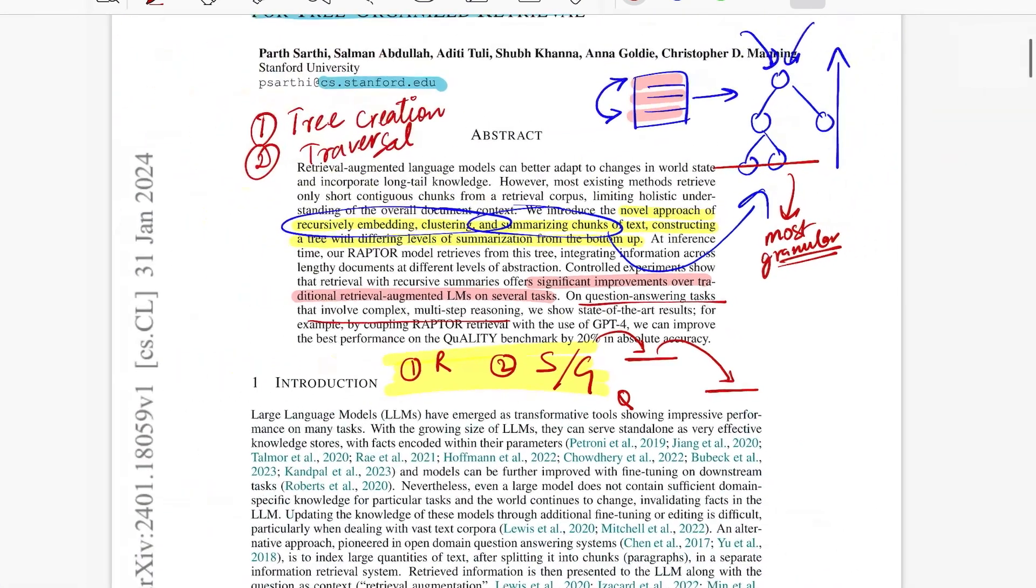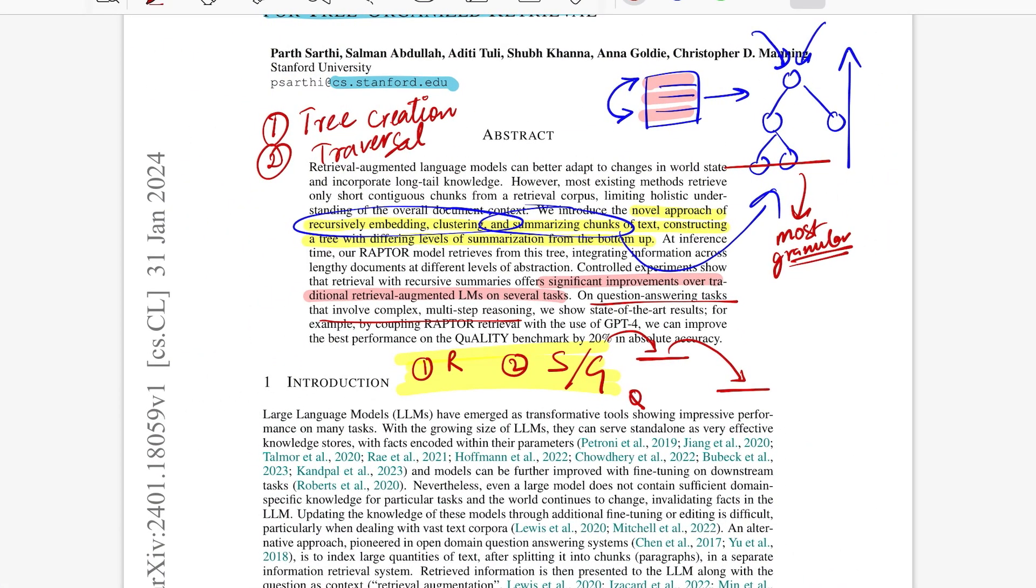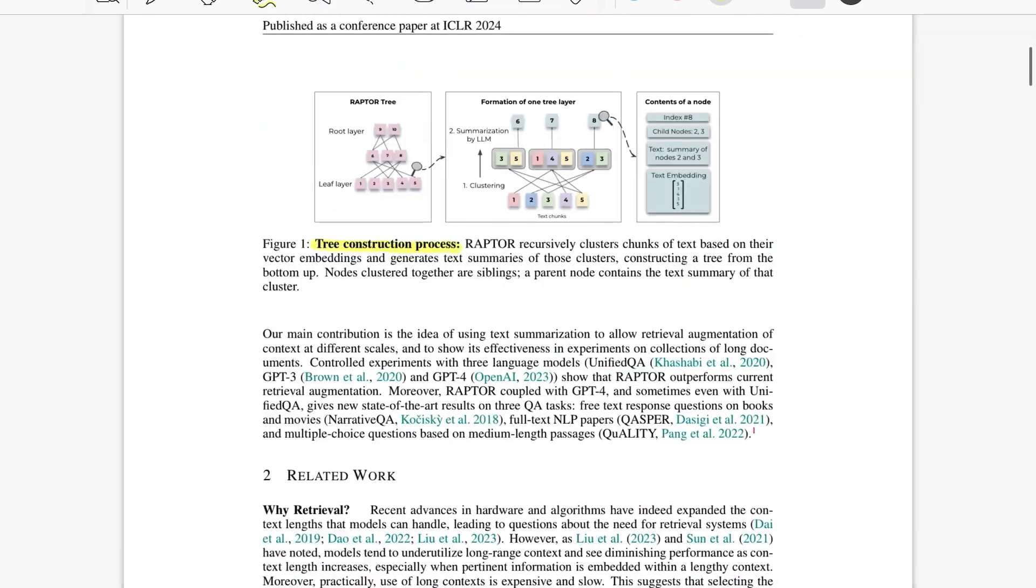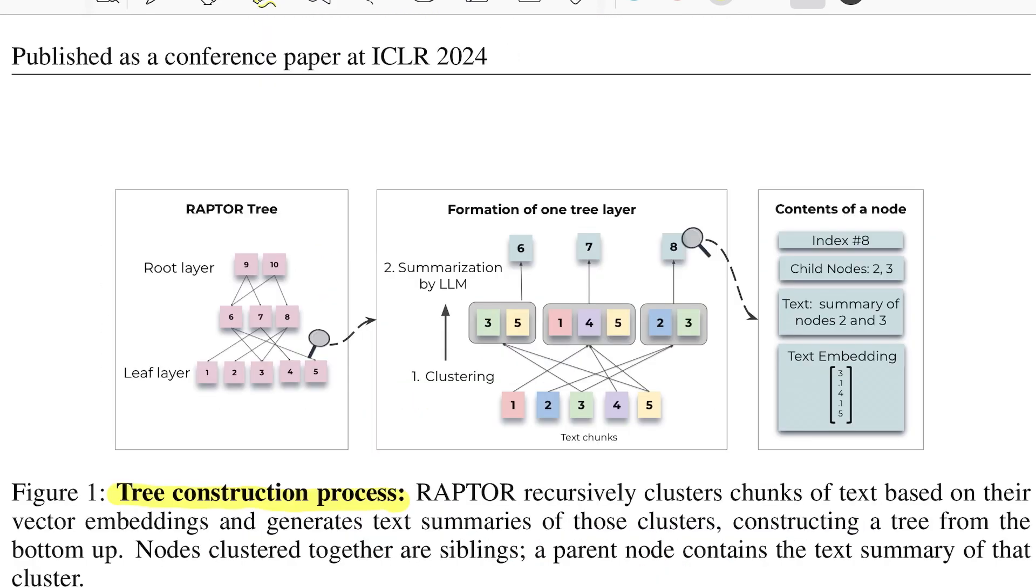Okay, so let's move forward and see the first phase, which is the tree creation phase. In the tree construction phase there are essentially two base steps: one is clustering, second is summarization.